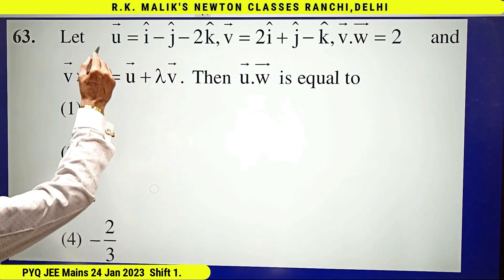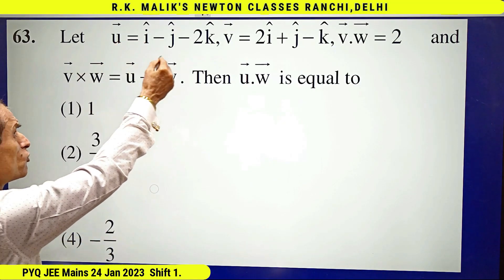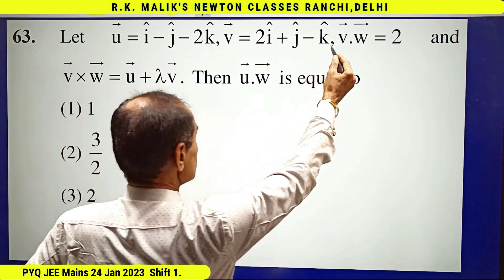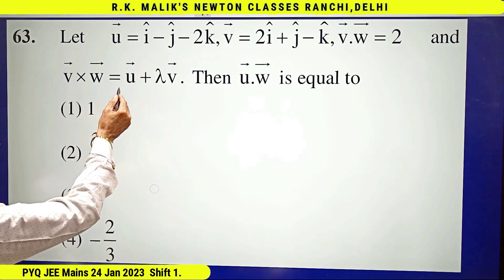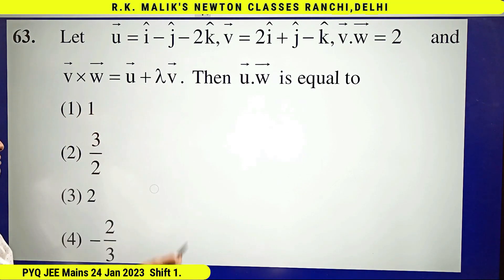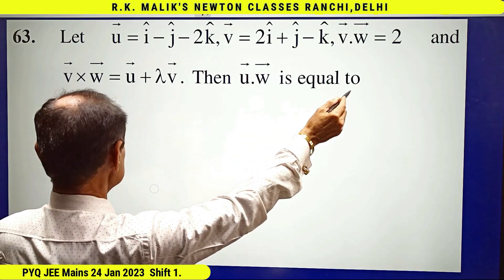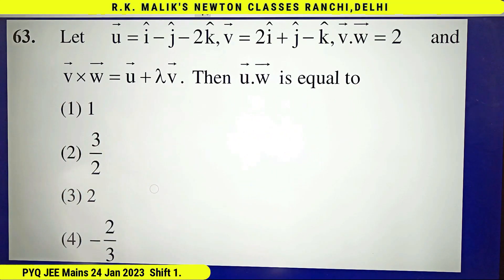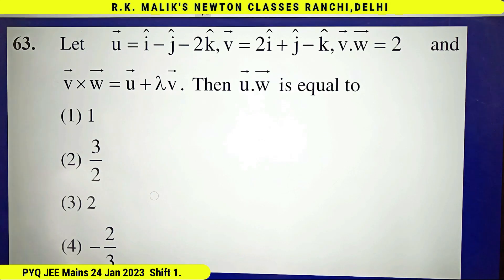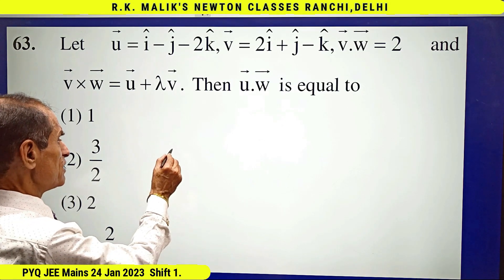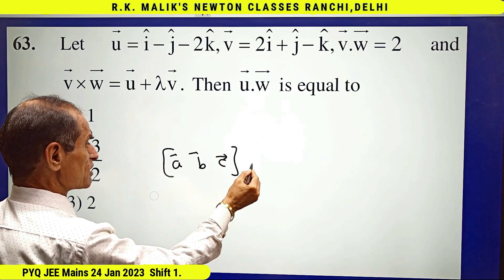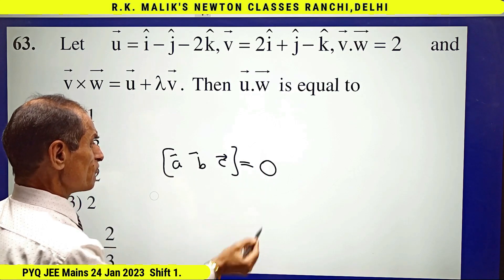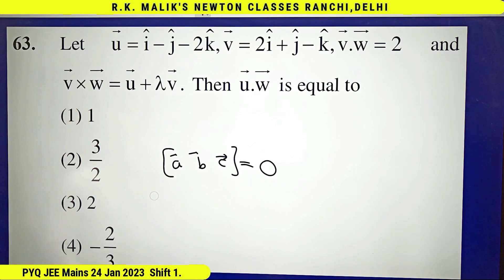In this question, vector u and vector v are given, v·w = 2, and v×w = u + λv. We need to find u·w. Before solving, keep this result in mind: in the scalar triple product of three vectors, if any two vectors are equal, the value of the scalar triple product is zero. I am going to use this formula in this question.